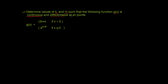Whenever a question says the function is continuous, we need to keep one thing in mind: at any point when checking continuity, the left-hand limit, right-hand limit, and the functional value at that point must all be equal. This is the necessary condition a function has to satisfy to be continuous at any point.